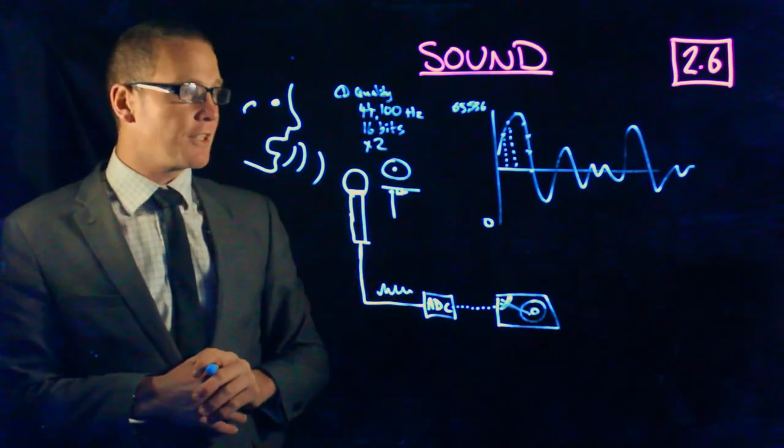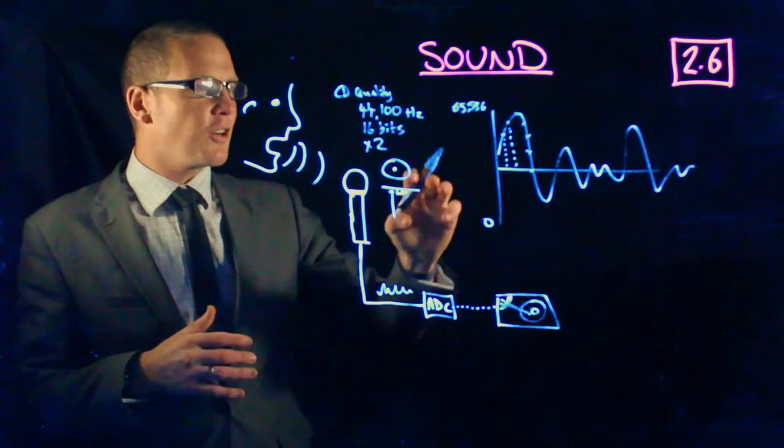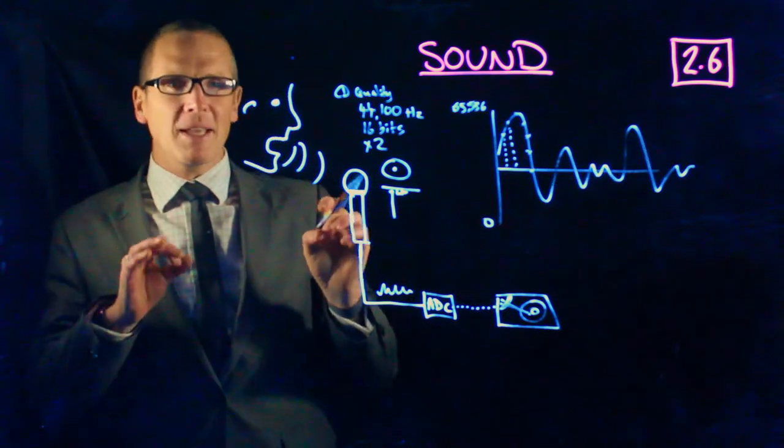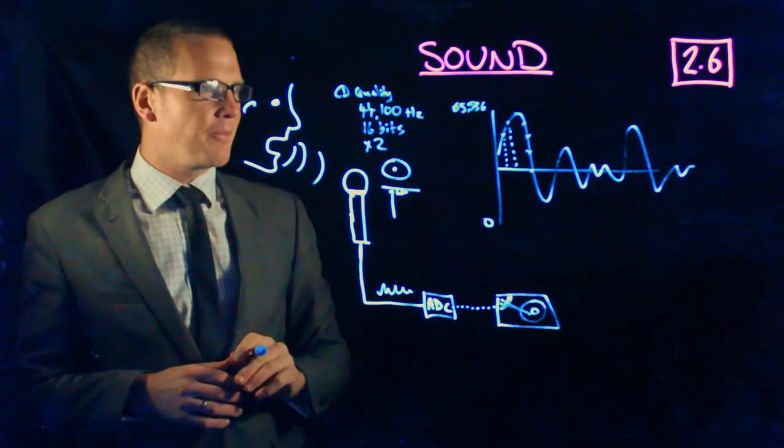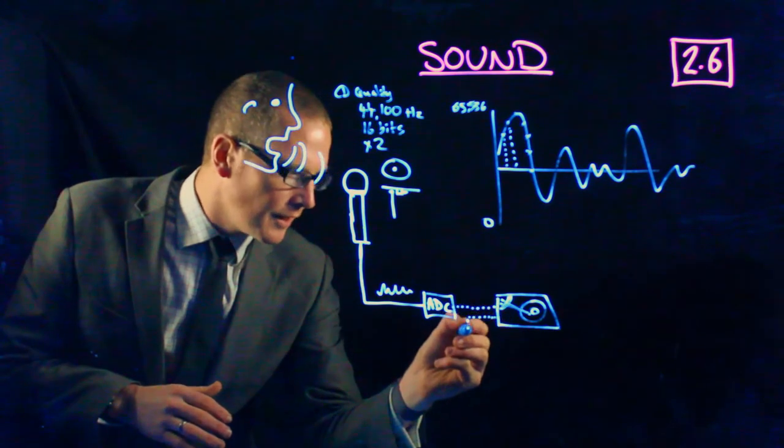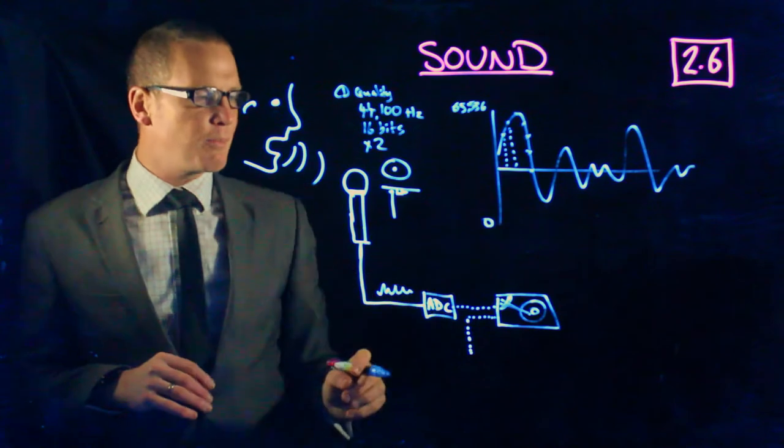When you want to play that sound back, it's not going to be exactly the same as your analog curve. It's going to be as close as it can be, but it won't ever be exactly the same. Your digital signal, all the ones and zeros that made up those measurements...